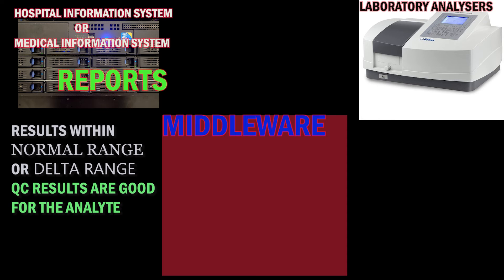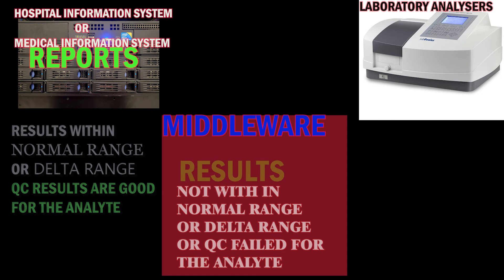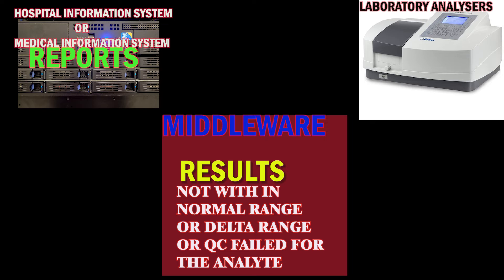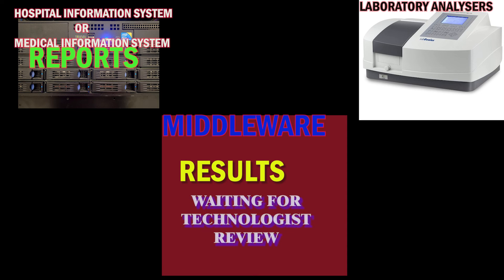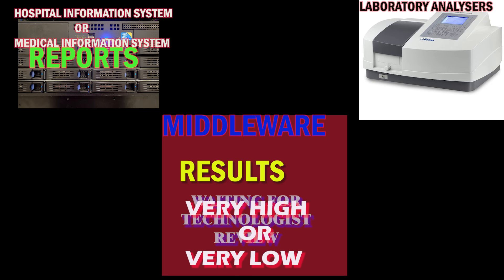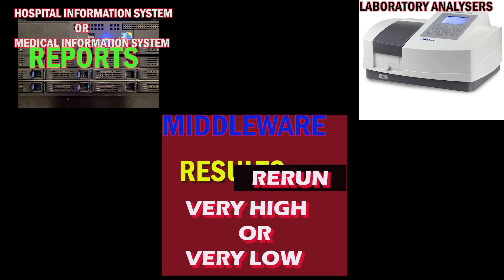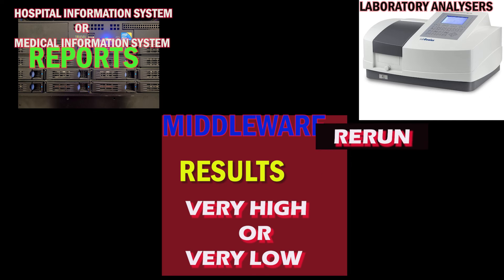Middleware validates test results by normal range, delta range, and quality control results. It can order reruns and auto-dilutions, and start priority samples first. Different color barcode labels can differentiate stat from routine samples; adding an extra alphabet before the accession number can instruct the instrument via LIS to process stat samples immediately. Sample turnaround time depends on the test, lab setup, efficiency of the phlebotomist, distance from the lab to collection center, and availability of technologists and instruments.